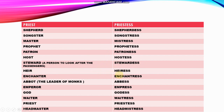Further examples of adding ESS: enchanter becomes enchantress. Abbot — the leader of monks — becomes abbess, the leader of nuns. Emperor becomes empress. God becomes goddess. Waiter becomes waitress. Priest becomes priestess. Headmaster becomes headmistress.